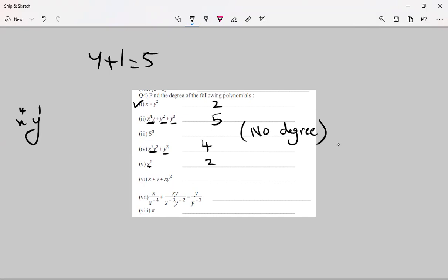The degree is 2. 1 plus 2 is 3. It will come up, it will become x1 and x4 plus xy. When it will come up, it will become 3 and y square. When it will come up, it will become q.